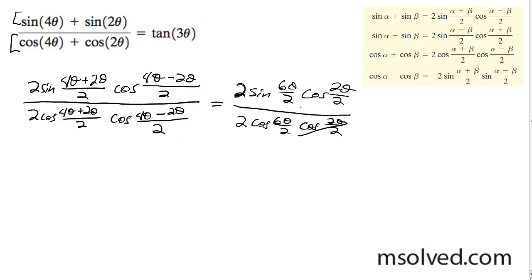As you can see here, I've got 2 like terms. I can cancel these out. And on the bottom, I get 2 sine 3 theta, 2 cosine 3 theta. I can cancel these 2's out. And I've got sine over cosine on the bottom, which is simply the same thing as tangent of 3 theta. That's how I prove it.